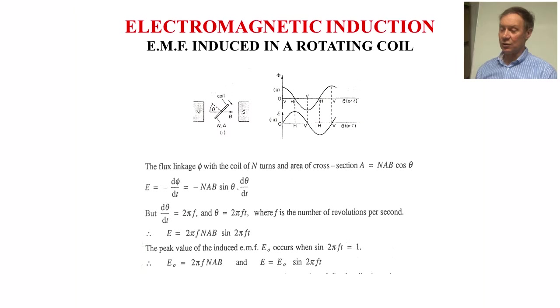EMF produced in a rotating coil: the flux linkage psi with a coil of N turns and a constant cross-sectional area A equals NAB cos theta. And since E is d psi by dt, that equals minus NAB sin theta d theta by dt. But d theta by dt is 2 pi f, where f is the frequency of revolution. So theta is 2 pi f t. Therefore E is 2 pi f NAB sin 2 pi f t. The peak value of the induced EMF E0 occurs when sin 2 pi f t is 1, therefore E0 is 2 pi f NAB and E equals E0 sin 2 pi f t.